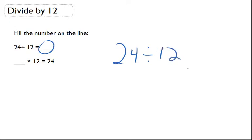What this is really asking us is how many times does 12 go into 24? We have to figure out how many times 12 goes into it. 12 times 2 actually equals 24.